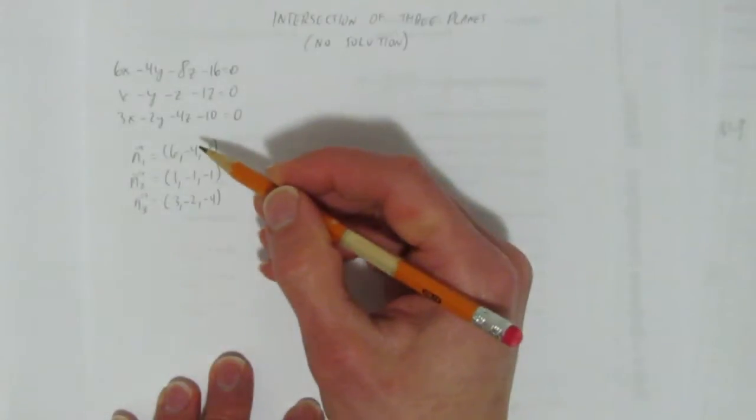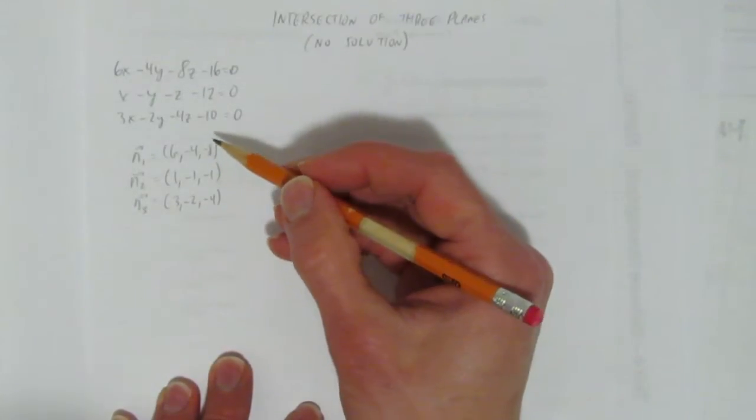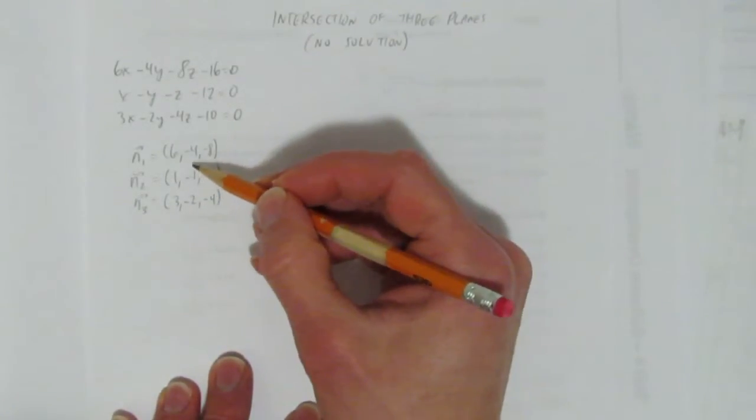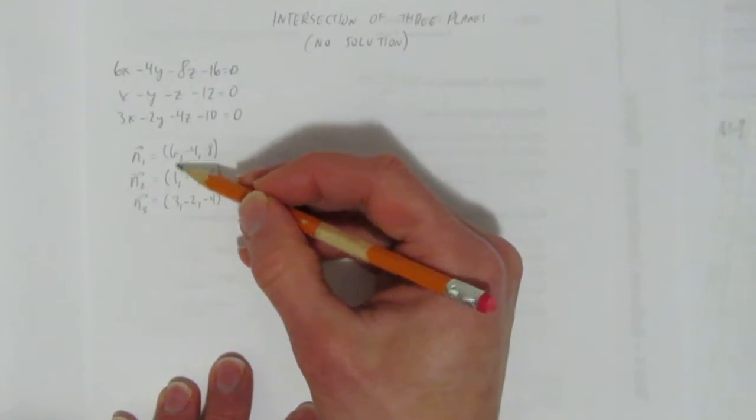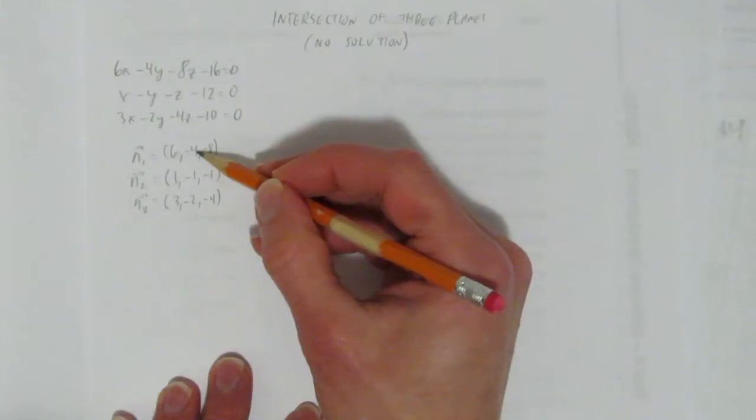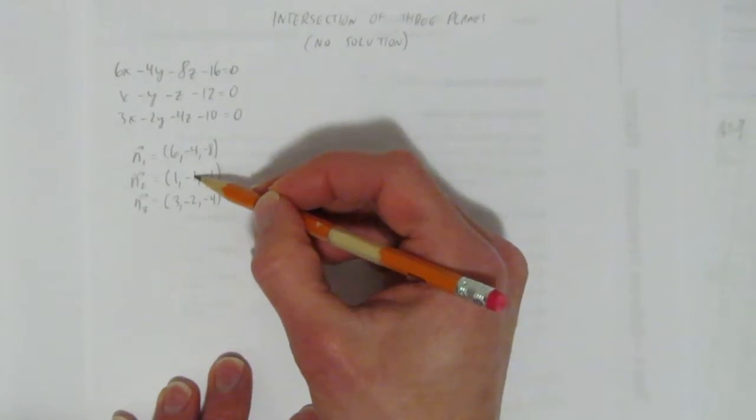So when I look at normal vectors, I want to compare are any of them multiples of the others? So n1 to n2, to get from 6 to 1 you divide by 6, but clearly negative 4 divided by 6 is not negative 1.